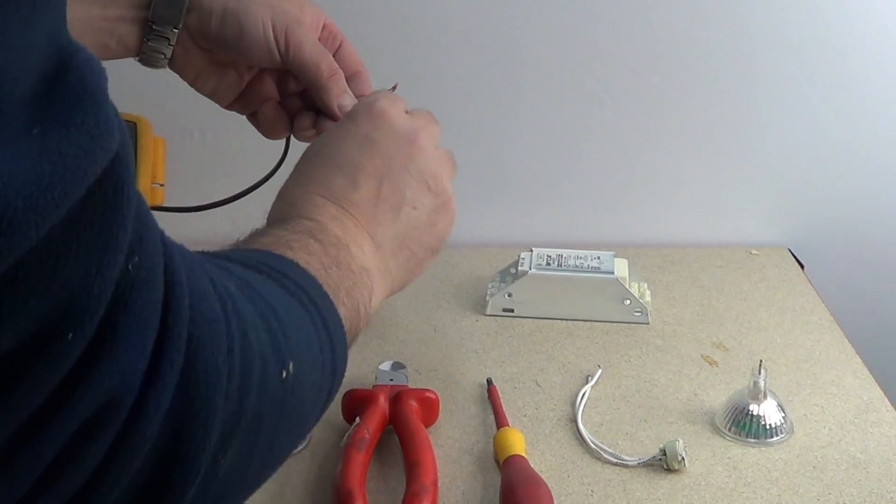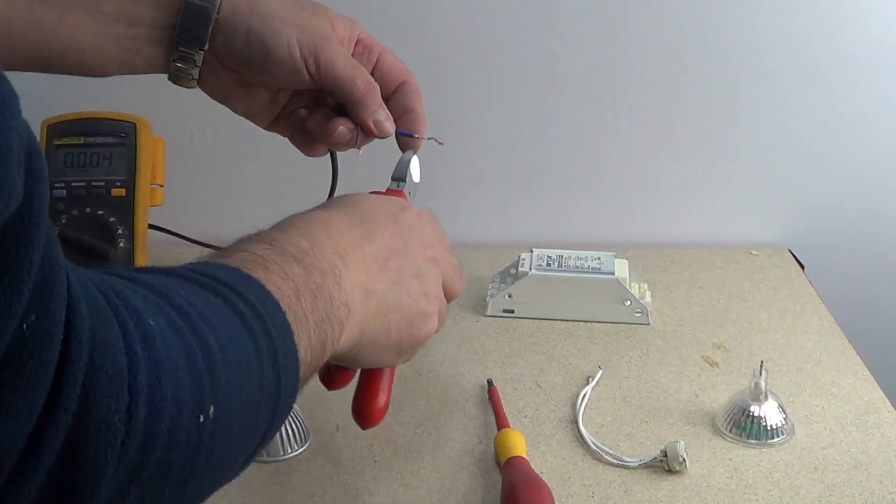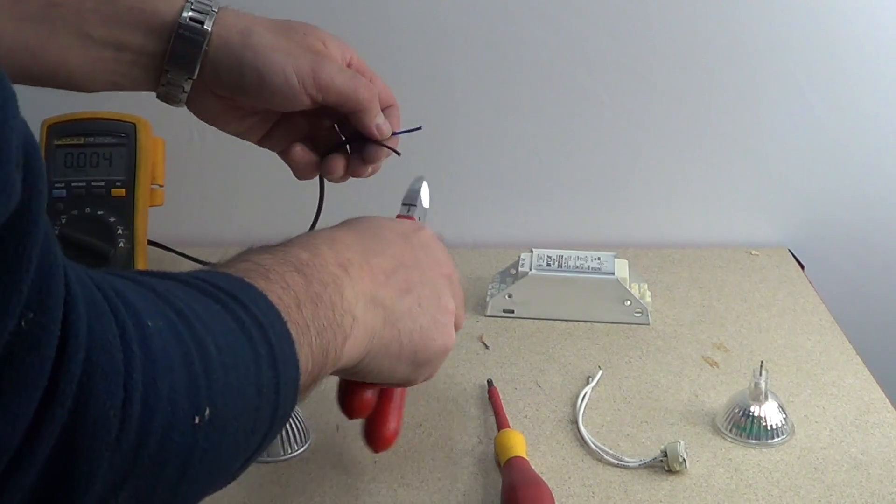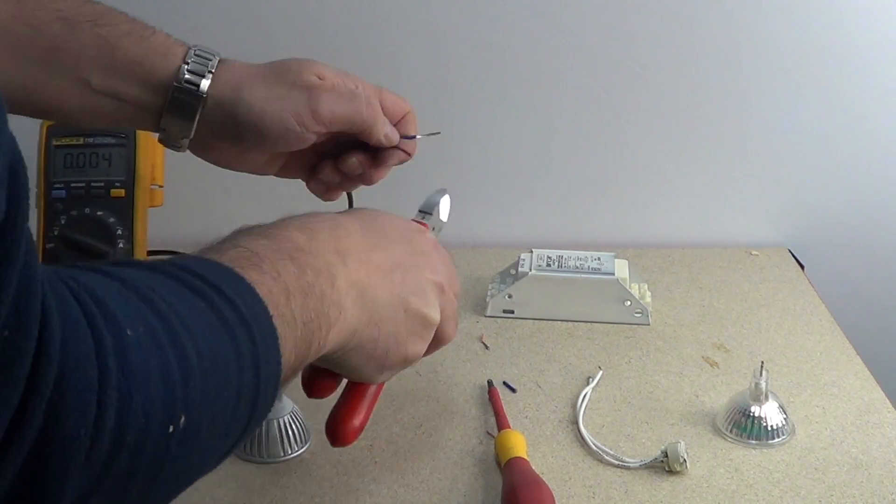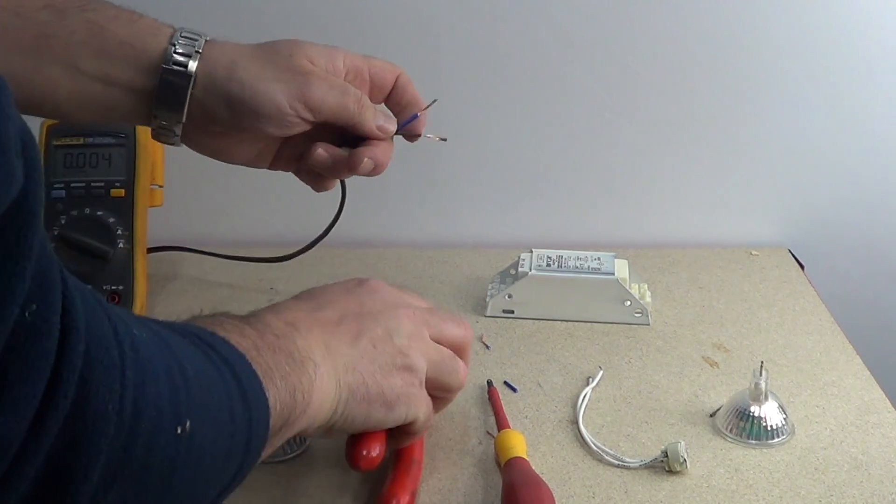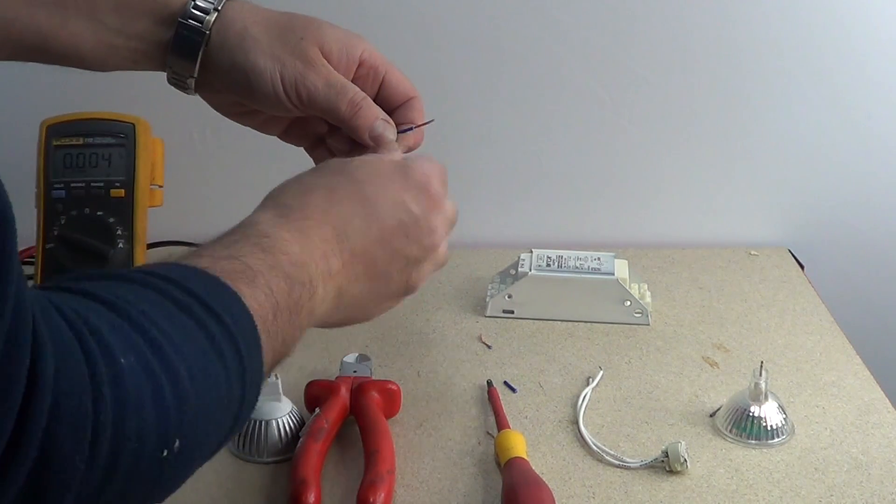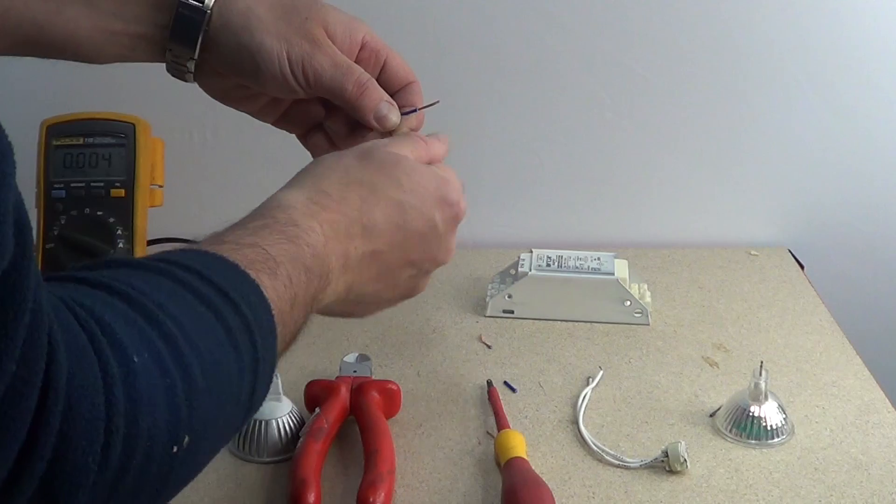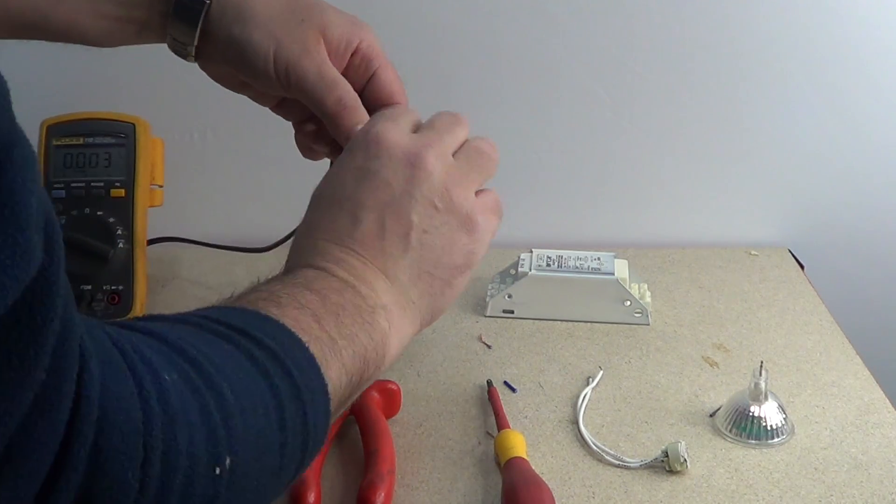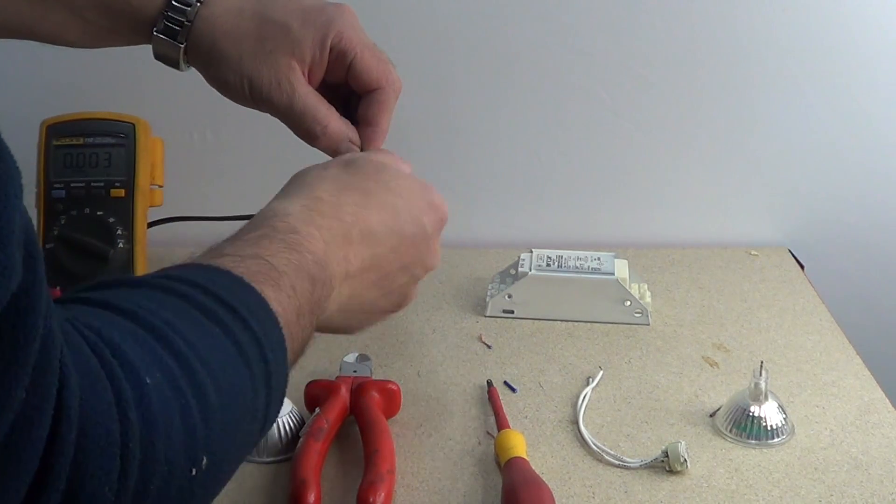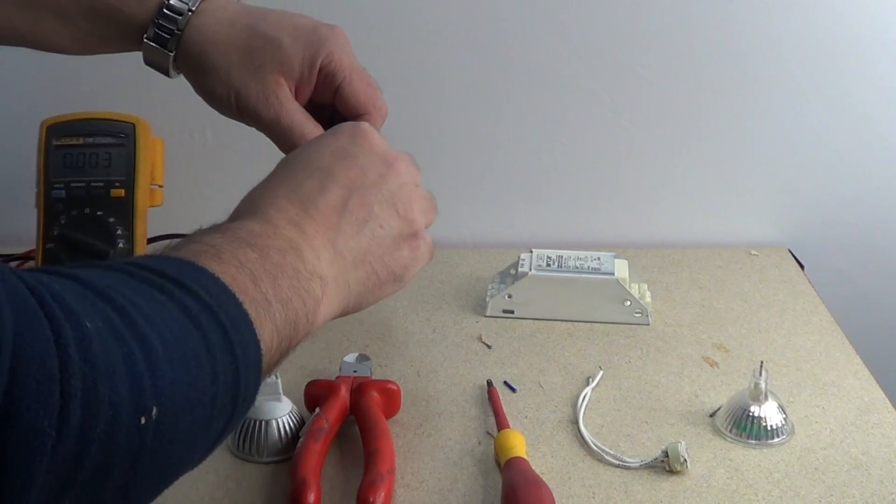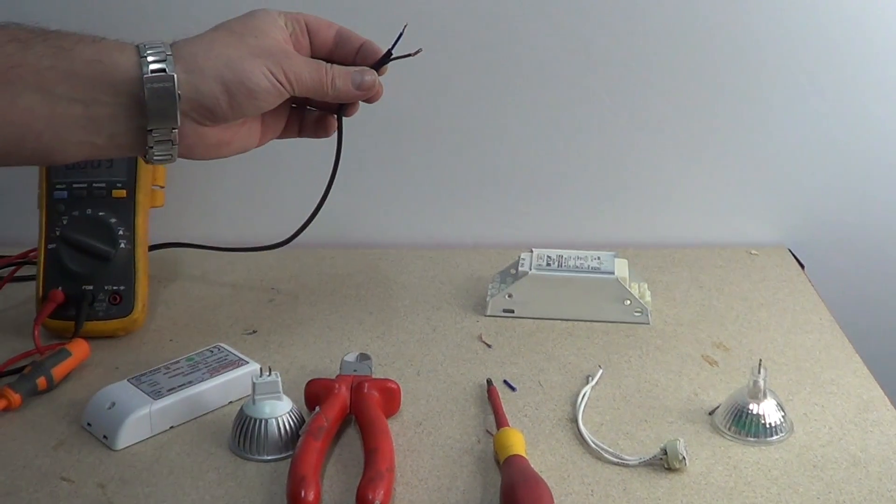I am going to cut these old terminations off and re-terminate. It is always good to do this because with the pressure of screws and connections sometimes the cables get a bit worn. I like to double back my cables. It makes for better connection and it fills the connector block better.